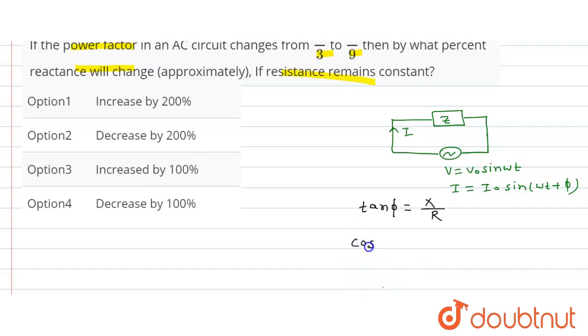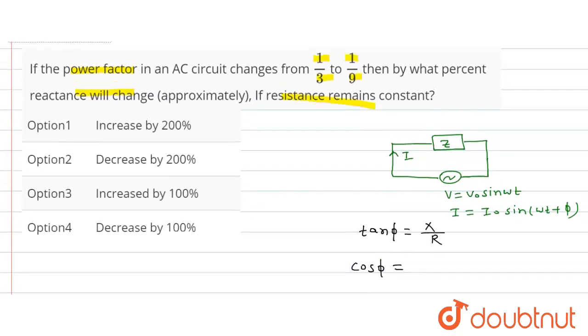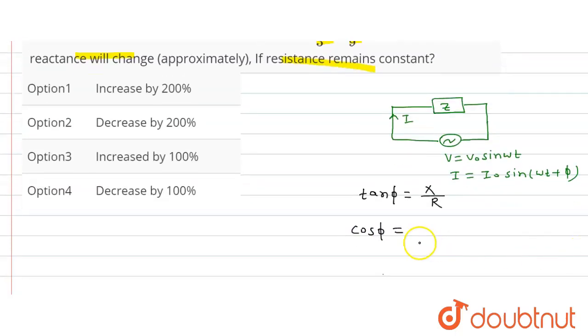And here cos phi, the power factor, is given as 1/3. So cos phi is equal to 1 upon 3. If we see from the triangle, so this value is 3, angle is phi, this is 1, and this is square root 8.